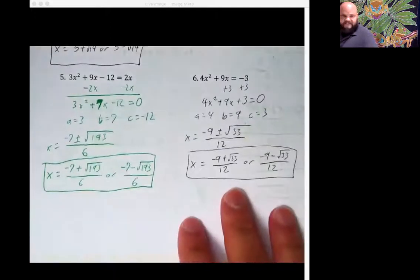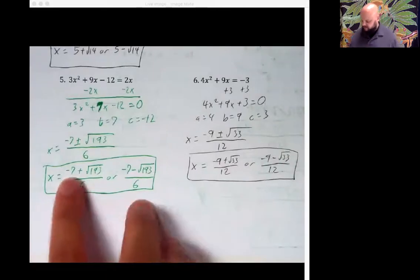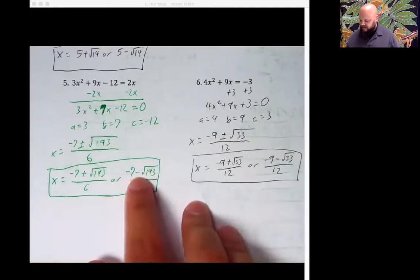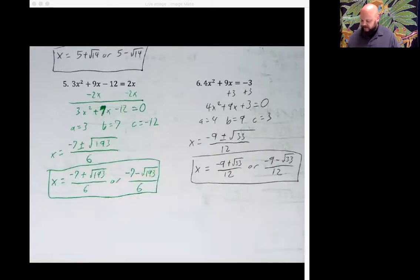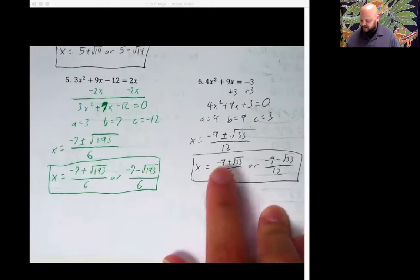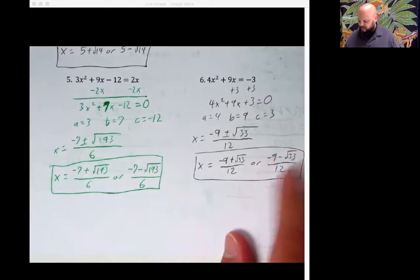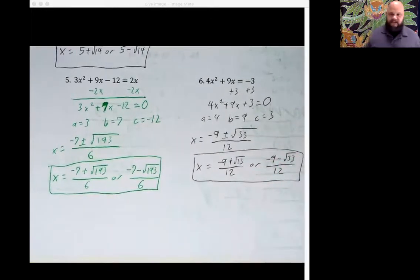5 and 6. We've got negative 7 plus root 193 over 6 and negative 7 minus 193 over 6. And finally, another nice one. This was very nice. Negative 9 plus root 33 over 12 or negative 9 minus root 33 over 12. Ding, ding. Good to go. All right, folks. That's it for this installment. Stay safe out there. World crazy.